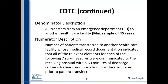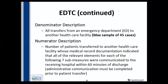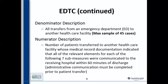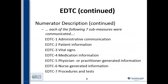The numerator is any of those patients who transferred to another healthcare facility where the medical record documented that all seven sub-measures were communicated. The administrative communication piece needs to be completed prior to patient transfer — that is the first piece of the puzzle. The two data elements in administrative communication are the healthcare-to-healthcare-facility and physician-to-physician communication being documented — those two need to happen prior to the discharge or transfer.